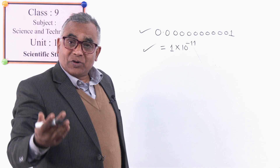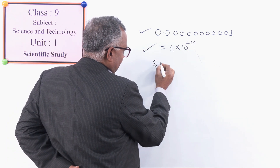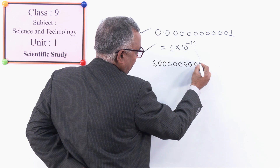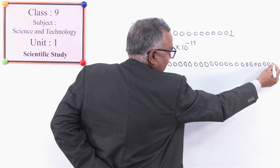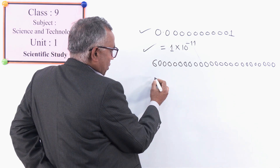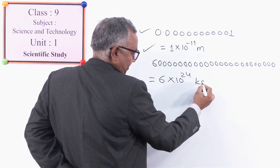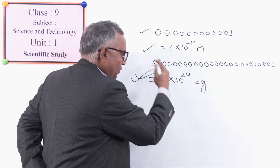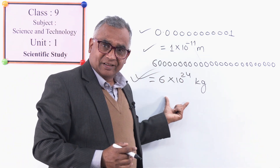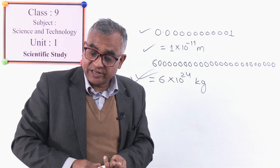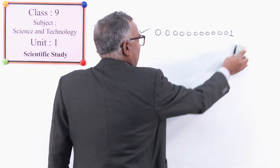Same thing with the mass of the Earth — there are 24 zeros, but it can be expressed in a very short form. In different ways, writing very big and very small numbers like this is very difficult. That is why we use scientific notation. Very small and very big numbers are written as powers of 10 — for example, 1 × 10⁻¹¹. This is called scientific notation.